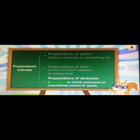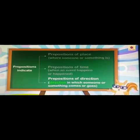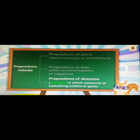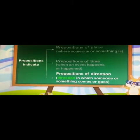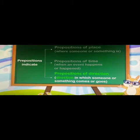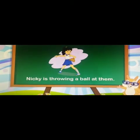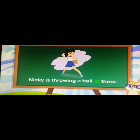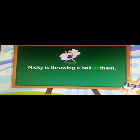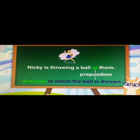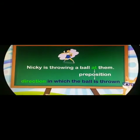Let us read about preposition of direction — the direction in which someone or something comes or goes. For example, Nikki is throwing a ball at them. Here 'at' is the preposition, because it shows the direction in which the ball is thrown. She is throwing the ball towards someone.